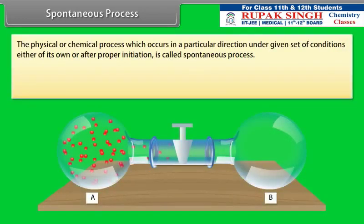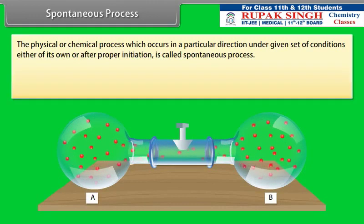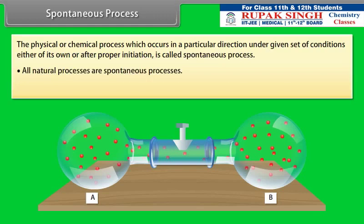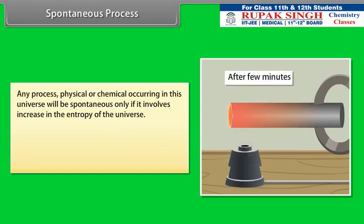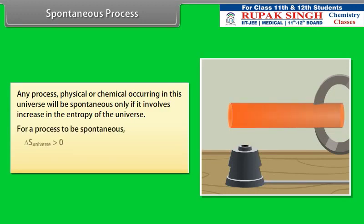Spontaneous process: a physical or chemical process which occurs in a particular direction under a given set of conditions, either on its own or after proper initiation, is called a spontaneous process. All natural processes are spontaneous. Spontaneous processes cannot reverse on their own under given conditions. Any process will be spontaneous only if it involves an increase in the entropy of the universe. For a process to be spontaneous, ΔS(universe) must be greater than zero. If ΔS(total) equals zero, it implies an equilibrium state.